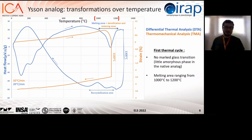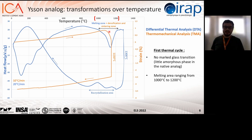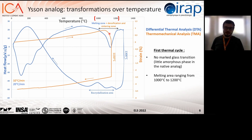We can start talking about the temperature-induced transformations occurring in the Ison analog during the first thermal cycle. We mainly used two experimental techniques. The first is differential thermal analysis, shown in blue here. A sample and a reference are placed in a furnace with a temperature program, and we monitor the temperature difference between them. When a change of matter state like solidification occurs, it is either endo- or exothermal. On the blue graph, there is a single melting zone centered around 1150 degrees, with a corresponding crystallization area when we cool down the sample.